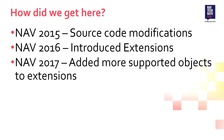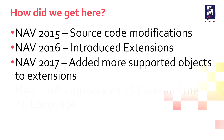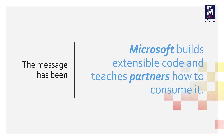In NAV 2017, we completed all of the basic object types and had most of the platform support we needed in place, but the development experience was still very rough. In 2018, we introduced VS Code and the AL language, and this is where people really started to say, 'I see the vision and I can see that you're committed to this.' During all this time, the message was that Microsoft builds extensible code and we teach people how to consume it.